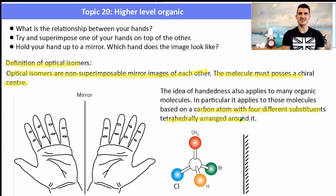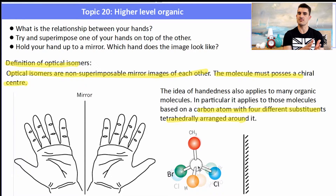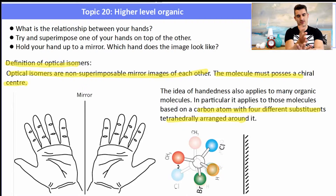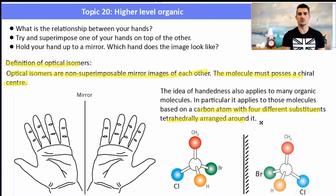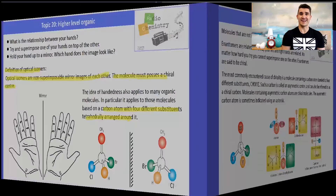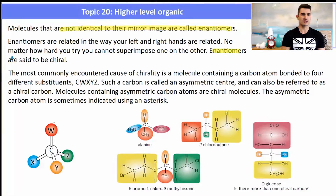A chiral center is a carbon atom with four different substituents tetrahedrally arranged around it. In this diagram, I have a carbon in the middle with four different groups of atoms coming off it. The mirror image of that molecule looks like this — they are isomers of each other, made of the same chemical compounds, but no matter what you do, like with your hands, you can't superimpose one on top of the other. So they're non-superimposable mirror images, which is the definition of an enantiomer. A molecule not identical to its mirror image is called an enantiomer, related the same way as your left hand is to your right hand, and they are said to have a chiral center.